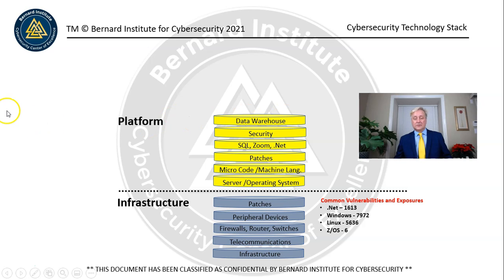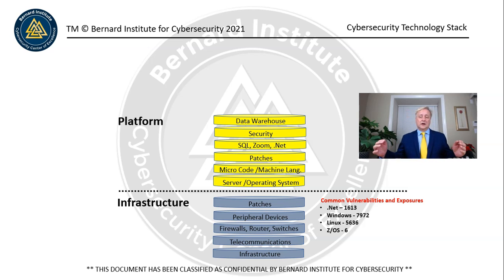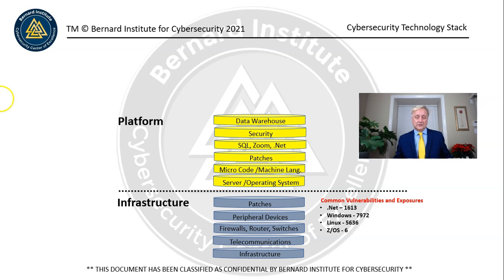On top of the platform is the data warehouse. The data warehouse is just like it sounds — a number of databases that contain data. It could be one database, but most databases are normalized these days. We have a database instance for each type of information that gets connected together through a logical view that provides a record for the overall database, so it's very distributed that way.